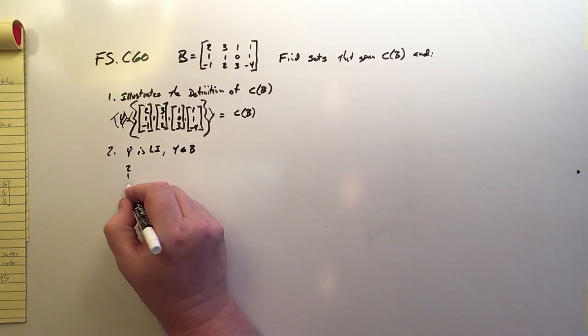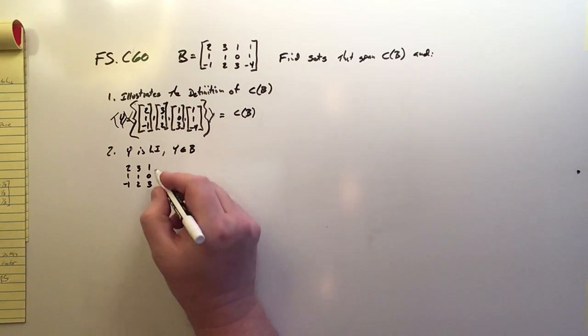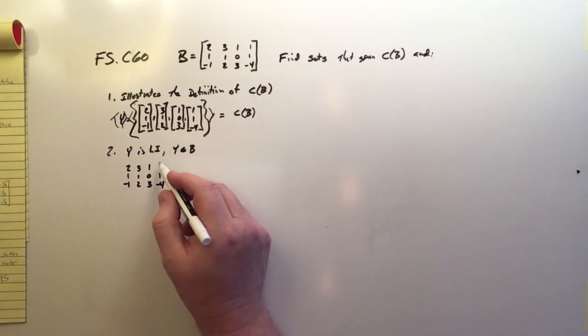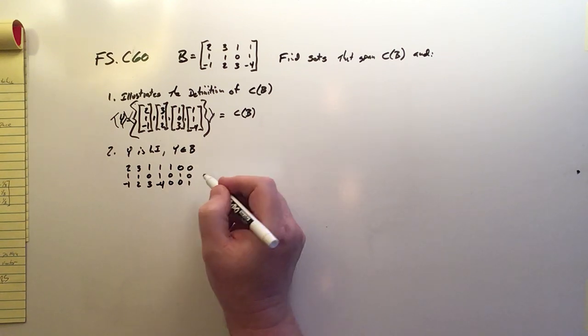So I'm going to take 2, 1, negative 1, 3, 1, 2, 1, 0, 3, and 1, 1, negative 4, and then I'm going to fill in as much of the identity matrix as fits. So 1, 0, 0, 0, 1, 0, and 0, 0, 1.